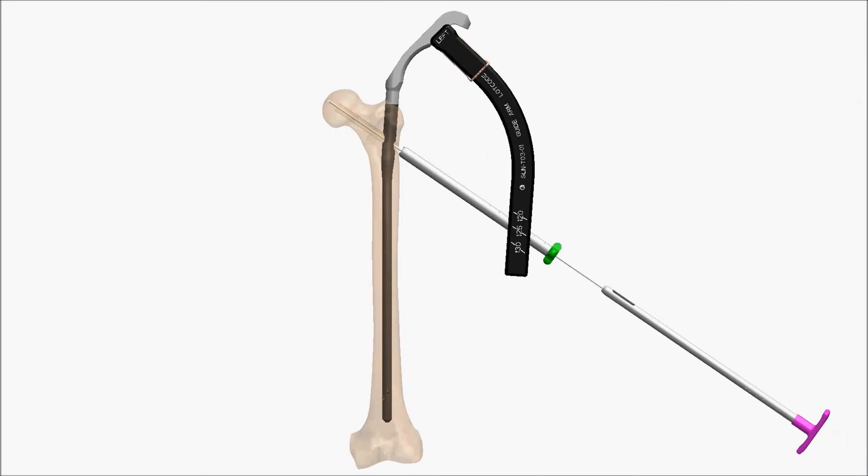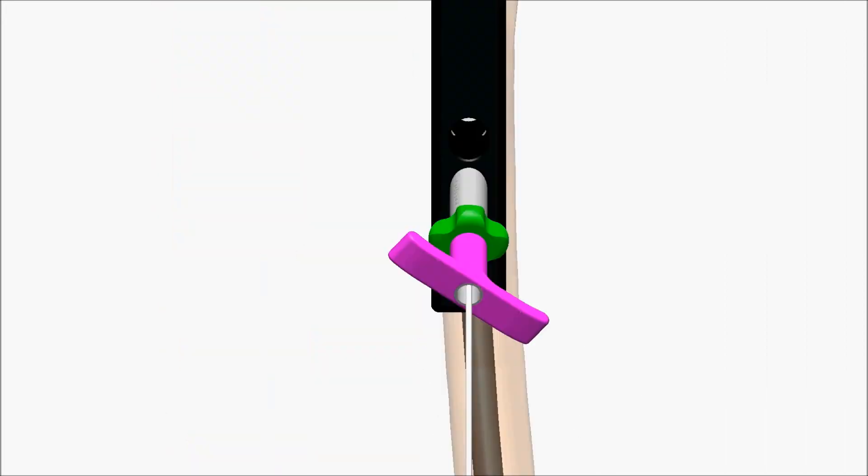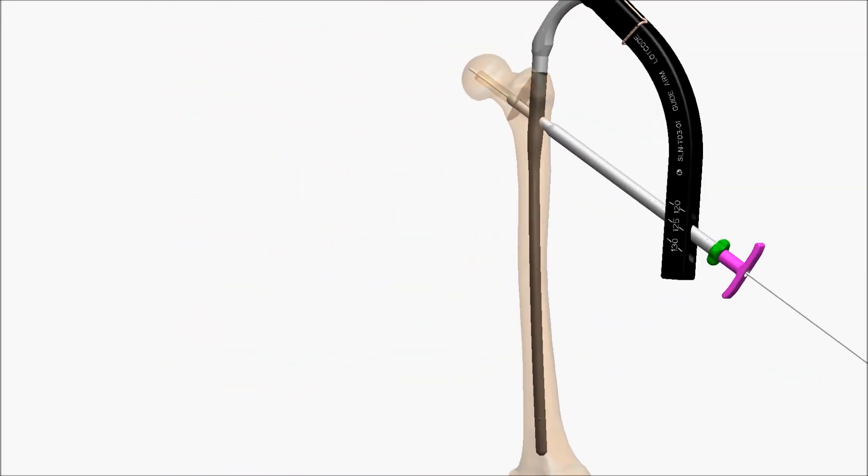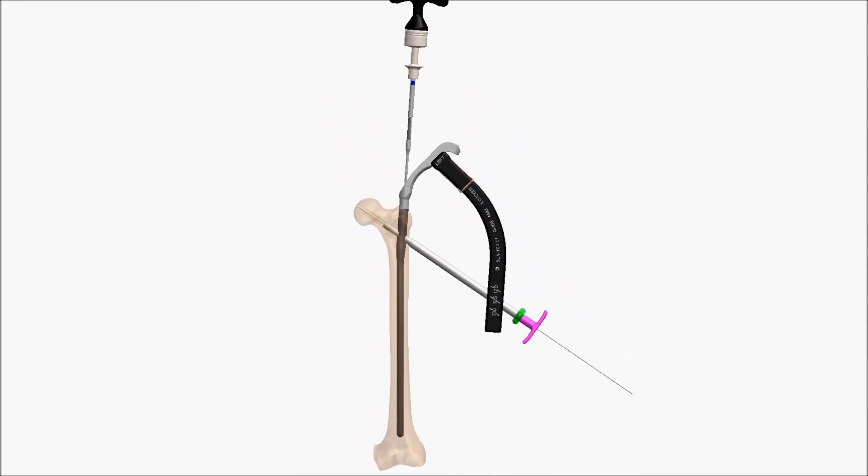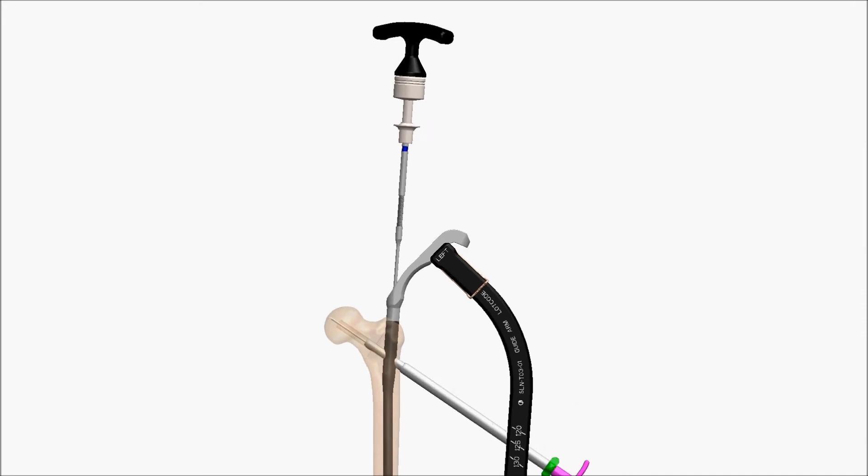Insert the lag alignment plug. The T-handle should be parallel to the guide arm. Pass the nail talon driver connected to the torque limiting T-handle down the nail until it seats in the distal nail talon mechanism.